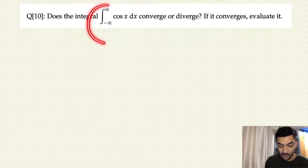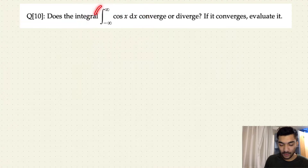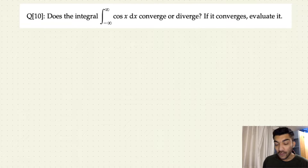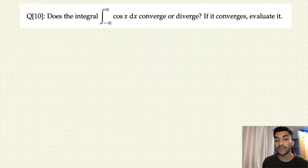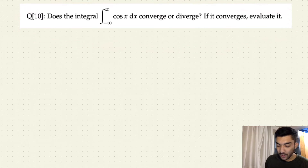Let's do one more question on improper integrals and let's check whether this integral — the integral of cos x dx from minus infinity to infinity — diverges or converges. To solve this question, we'll use all the concepts that we covered in the last video, so I highly suggest you first watch my previous videos if you have not watched them in order to get the full context.